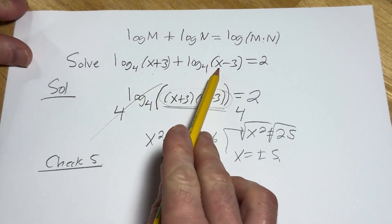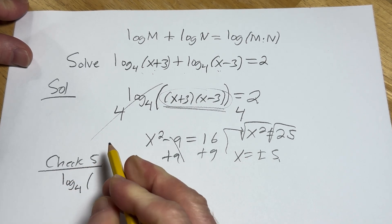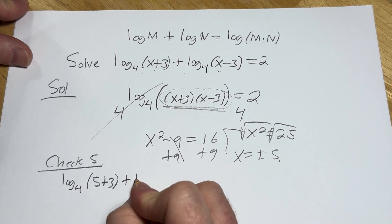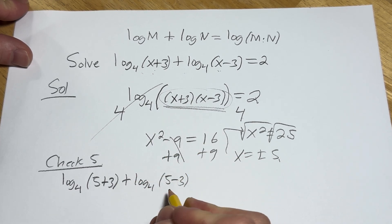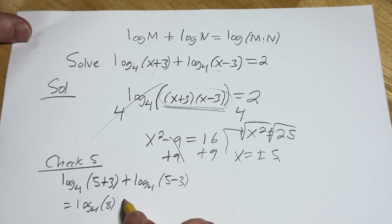we put the 5 where the x is in the original equation. So it'll be log base 4 of 5 plus 3 plus log base 4 of 5 minus 3. So what's that going to be? It's going to be log base 4 of 8 plus log base 4 of 2.